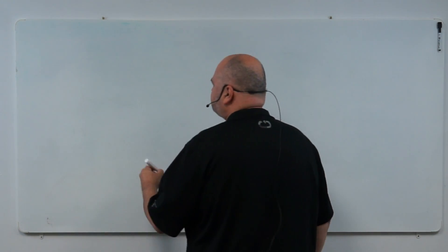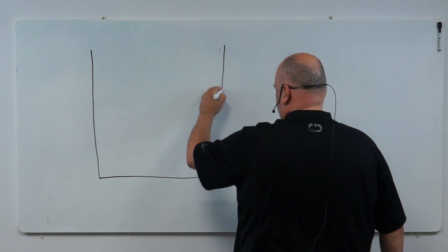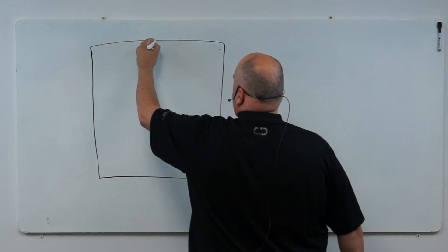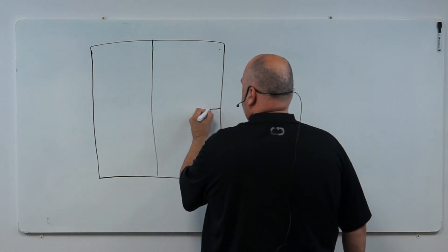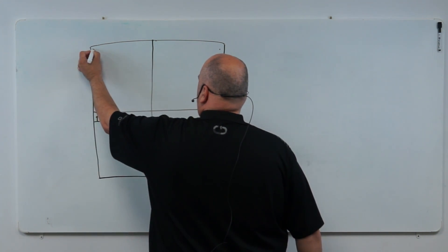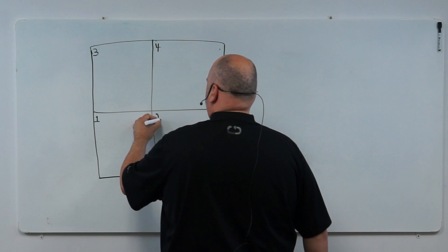In your outline you'll see I gave you box one, box two, box three, and box four. You're going to have to draw this out for yourselves because I couldn't draw it on your outline, but I'm going to draw it on the board and then explain it. We're going to make this box and break it up into four sections: box one, box two, box three, and box four.